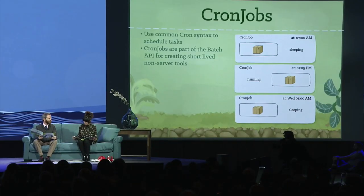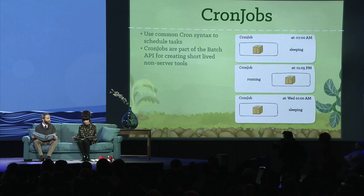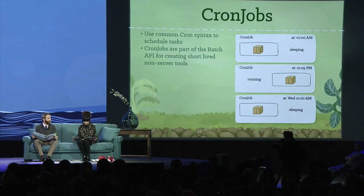Cron jobs. Cron jobs provide a method for scheduling the execution of pods. They're excellent for running periodic tasks like backups, reports, and automated tests. They use common cron syntax to schedule tasks, and they're also part of the batch API for creating short-lived non-server tools.